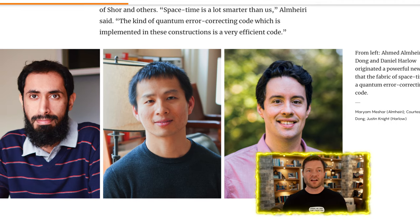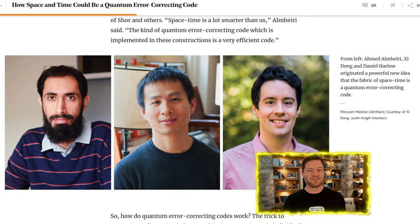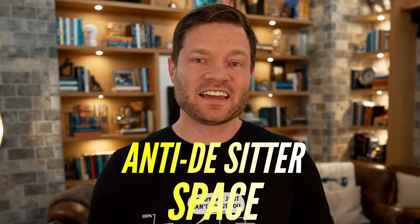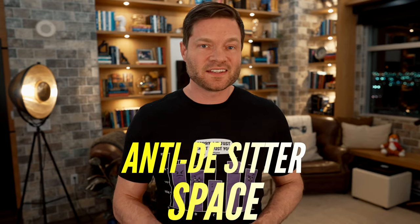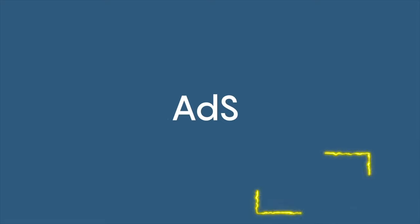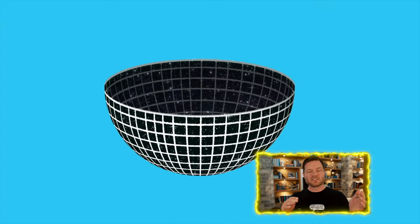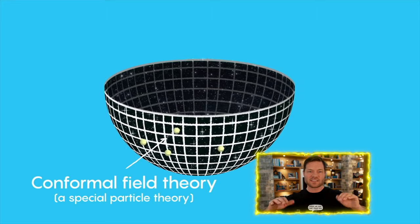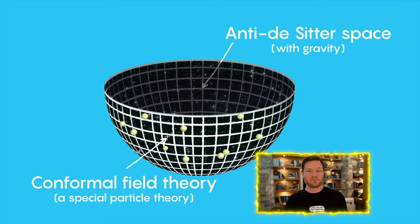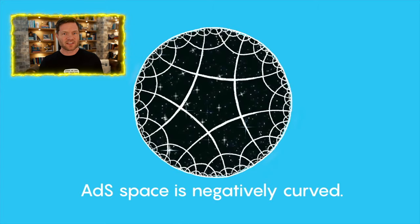Physicists Ahmed Almheiri, Zai Dong, and Daniel Harlow suggested that maybe the holographic nature of space-time resembles quantum computing code. This would be technically something called anti-de Sitter space — a universe that has its own special rules that make its shape. For anti-de Sitter space, you need to imagine something like a horse's saddle or the shape of a Pringles chip, because it's curving away from us in two different directions. Although the jury is still out — could be infinite, could be flat — it does seem like a real possibility for the universe we live in.